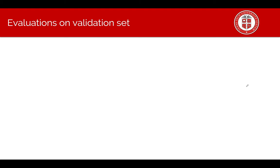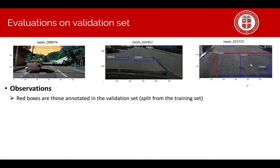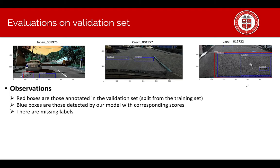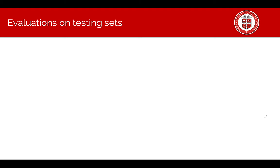We also do evaluation of our result on the validation set. The red boxes are those annotated in the validation set, which is a split from the training set, while the blue boxes are those detected by our model with corresponding scores. It's observable that there are missing labels in these cases. There is a damage that we detected over here but no label placed in here as well.